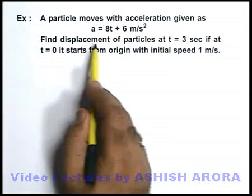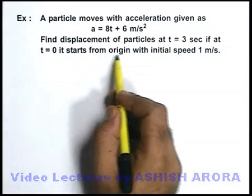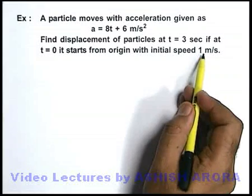We are required to find the displacement of the particle at t equal to 3 seconds if at t equal to 0 it starts from origin with initial speed of 1 meters per second.